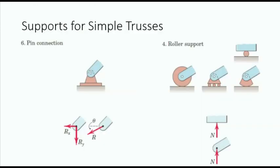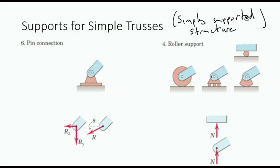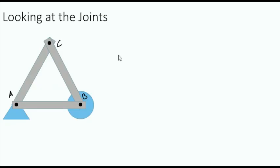In order for a truss structure to be statically determinate — which means we can solve for the reaction forces — it must be a simply supported truss. For simply supported trusses, the truss is connected to the ground by a pinned connection and a roller connection. This is statically determinate because this connection system is represented by three unknowns. When a structure is supported by a pin and a roller, it is called a simply supported structure, or in this case, a simply supported truss.